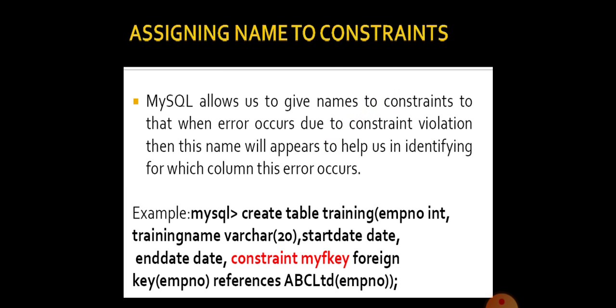How do you give names to a constraint? As we discussed with the foreign key, you can give a constraint name by using the CONSTRAINT clause followed by the name you wish to assign. Here, the constraint used is FOREIGN KEY with REFERENCES, and for Employee Number I am assigning the foreign key the name MyFKey. Whenever I need to refer to it, I can use the name MyFKey. MySQL allows us to name constraints so that when an error occurs due to a constraint violation, this name will appear to help us identify for which column the error occurred.